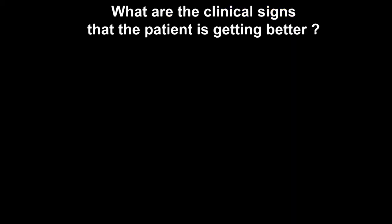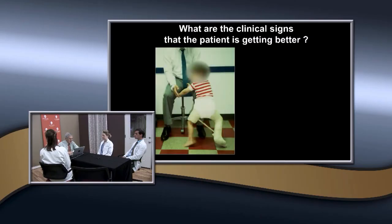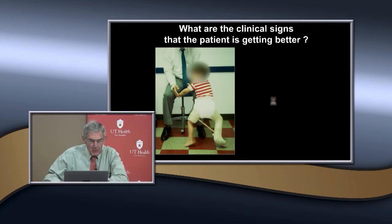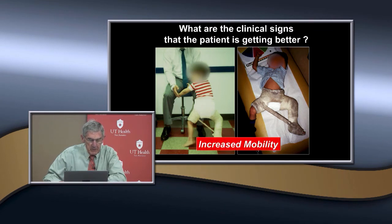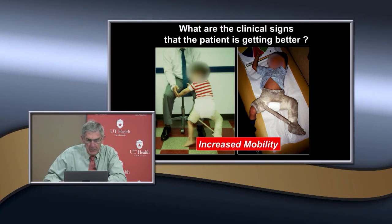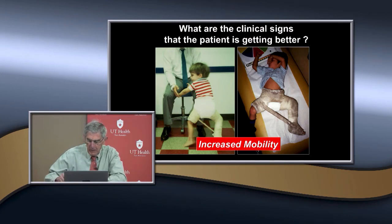You know the patient is getting better when they start getting more active — you'll see them walking or crawling around. Tell the parents this indicates improvement, not a problem. If the fracture doesn't have internal stability, any movement will cause spasm. Movement without spasm indicates internal stability has developed.